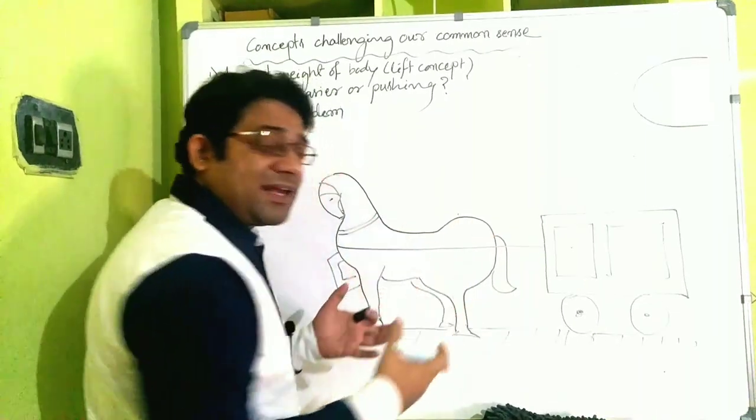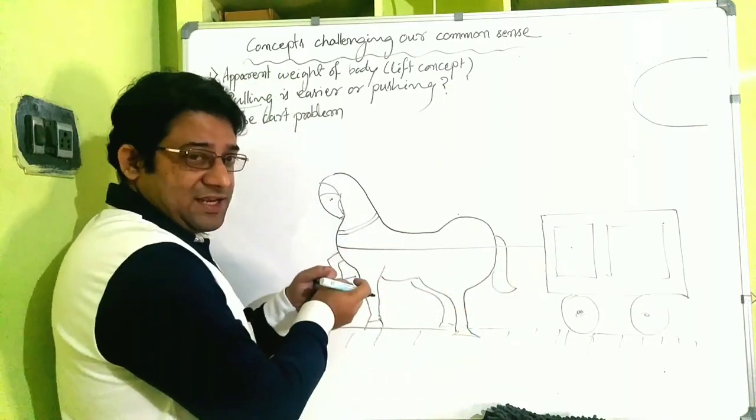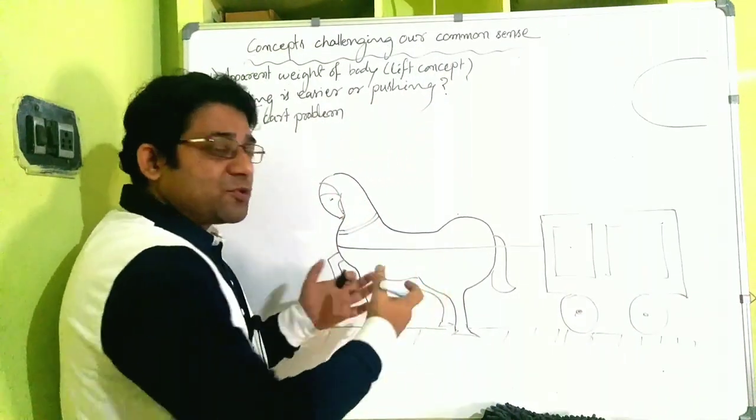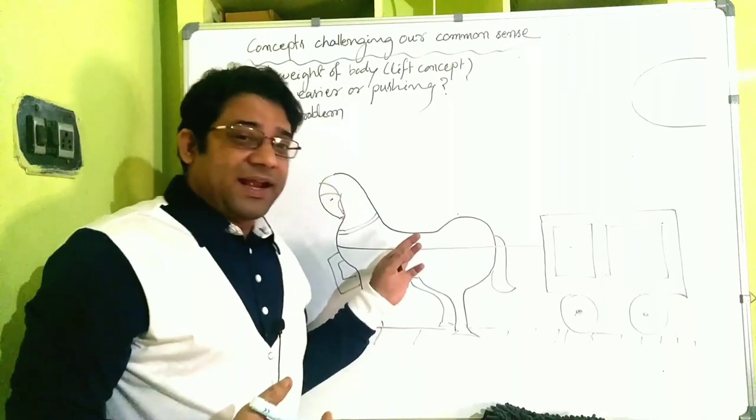Now, how can the motion of the cart be justified? If the horse pulls the cart and the cart also pulls the horse back, then how is the motion being possible? You know that the cart is moving, right? Then how can the motion of that cart be explained?